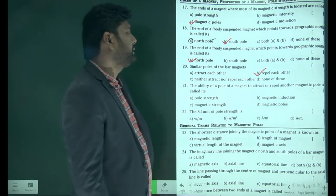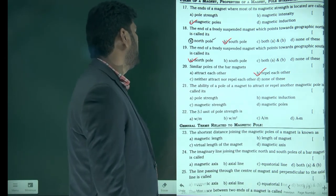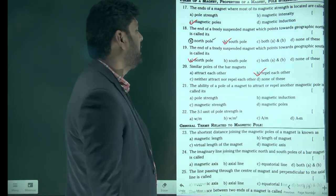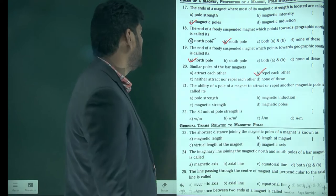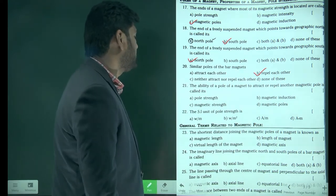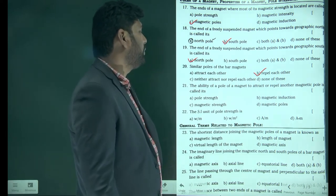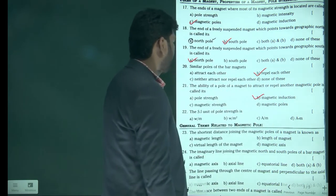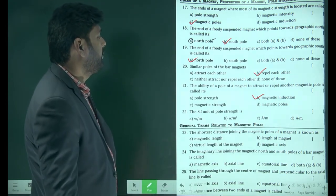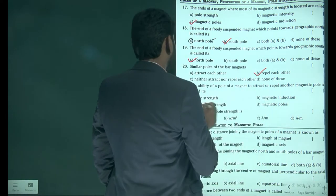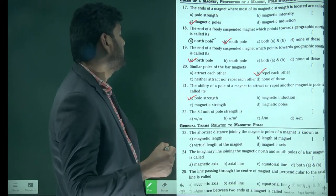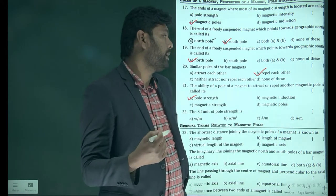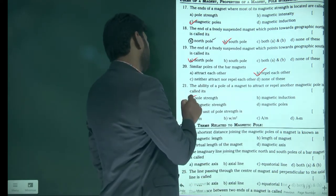The ability of a pole of a magnet to attract or repel another magnetic pole is called — pole strength, magnetic induction, magnetic strength, or magnetic pole? The ability of a pole of a magnet to attract or repel another magnetic pole is called pole strength. They are asking about the strength of the pole, so the answer is pole strength.